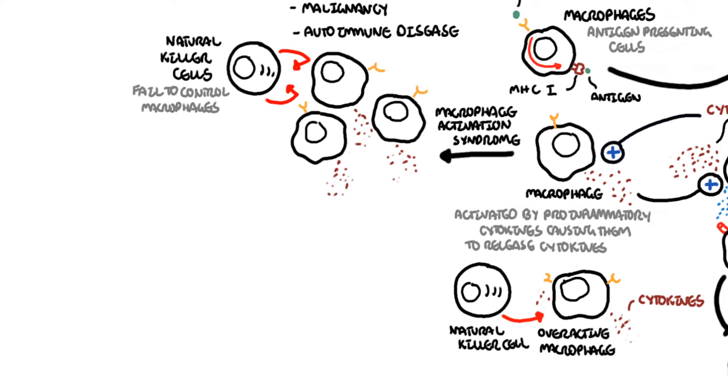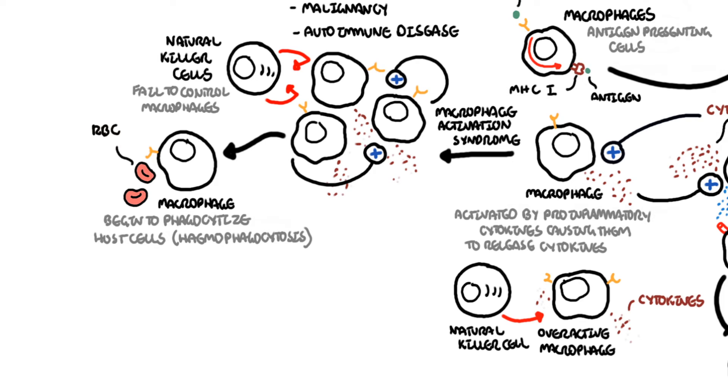Unregulated and uncontrolled macrophages will secrete many different cytokines, activating one another, resulting in an aggressive cell which can start eating up anything around it. Macrophages can even eat red blood cells when overactivated, hence hemophagocytosis.